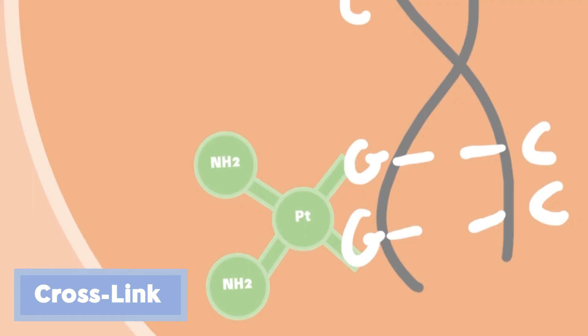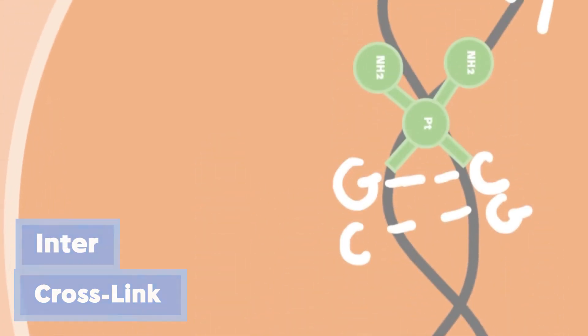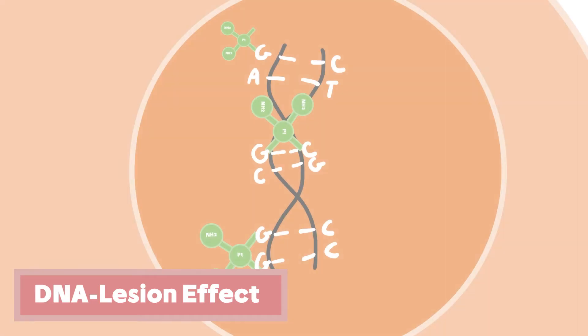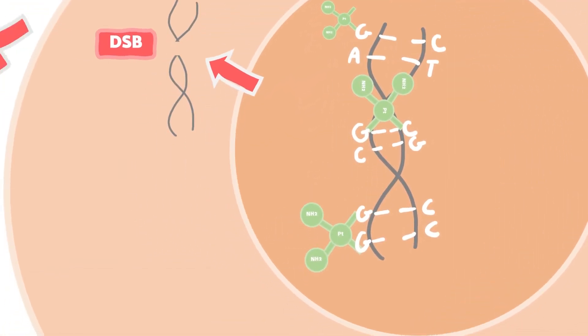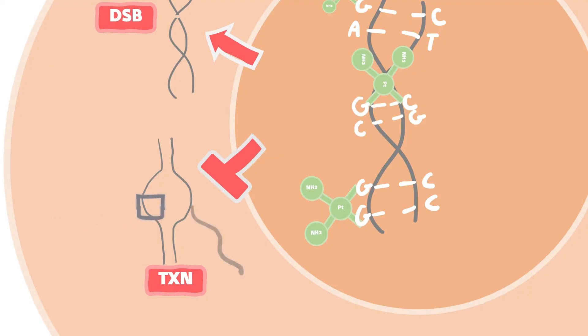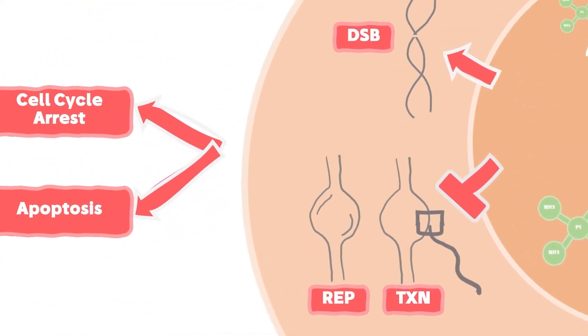Cisplatin can form a monoadduct resulting from its binding with a purine base, or form a cross-link connecting two nucleotides together. This linkage can be intra within the same strand or inter between two opposite strands.